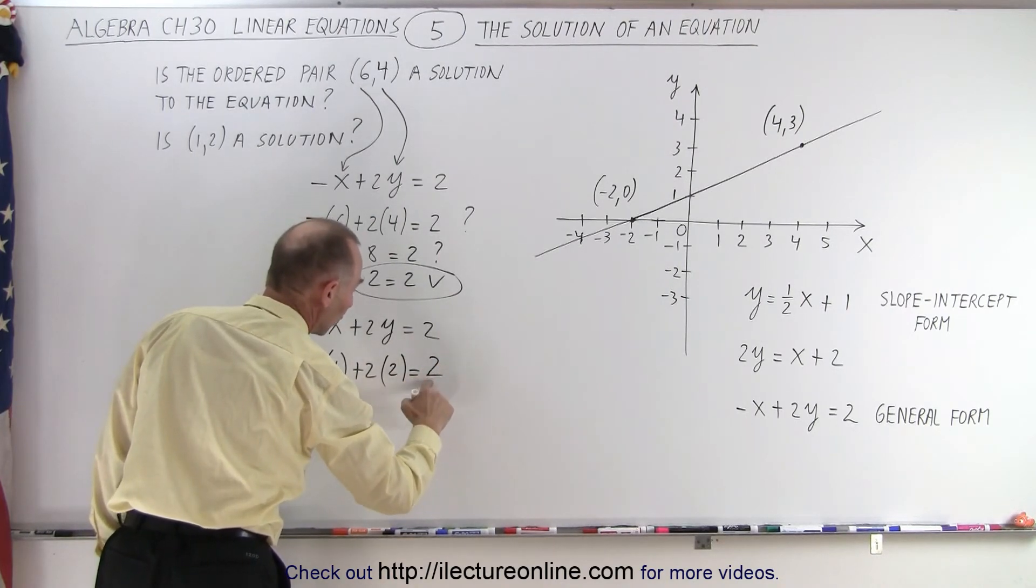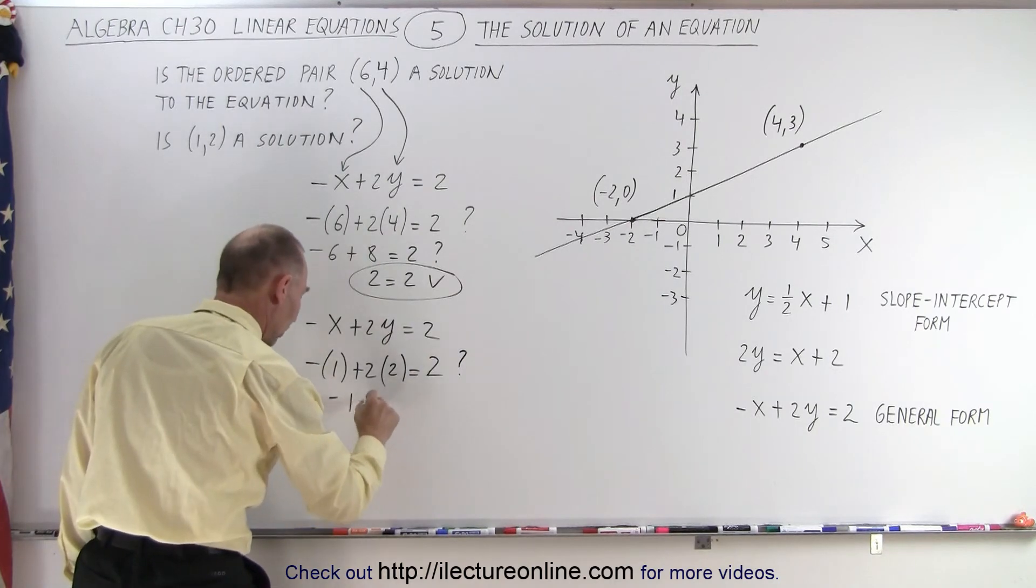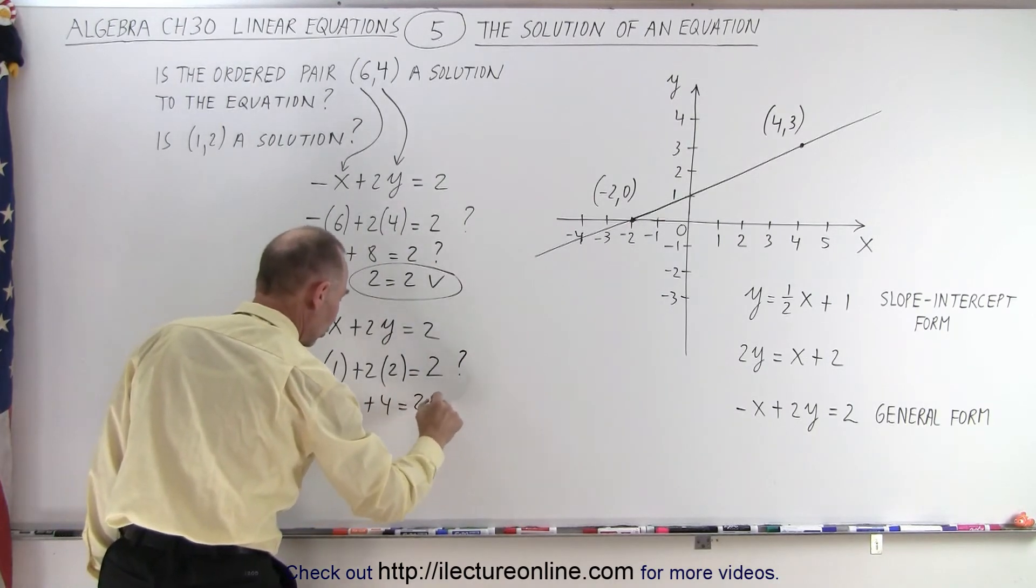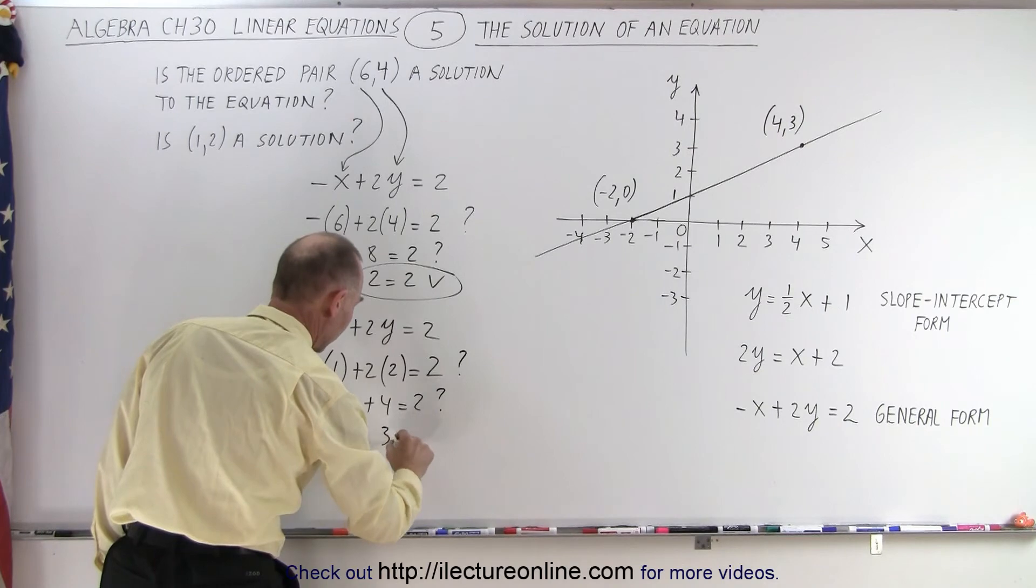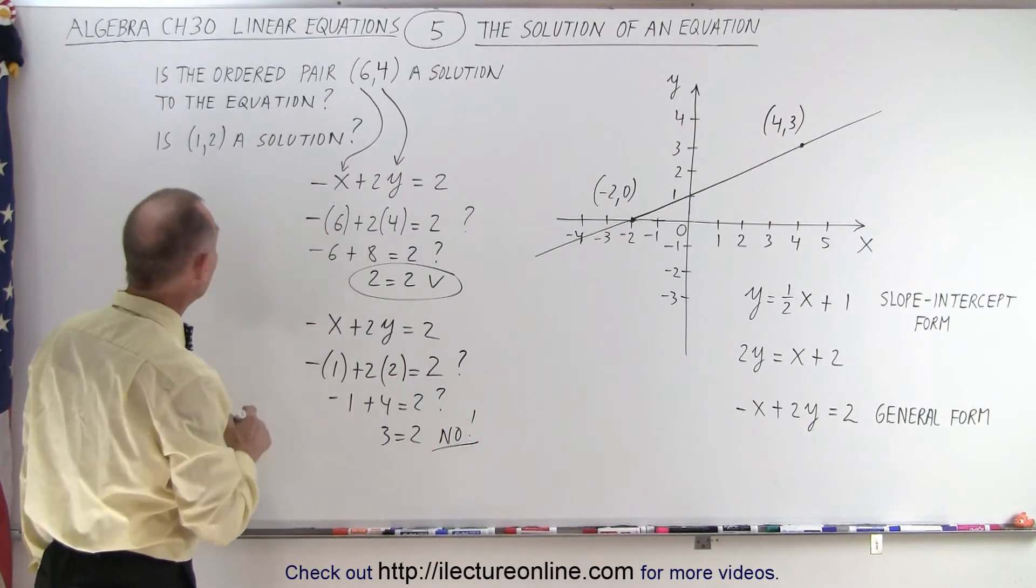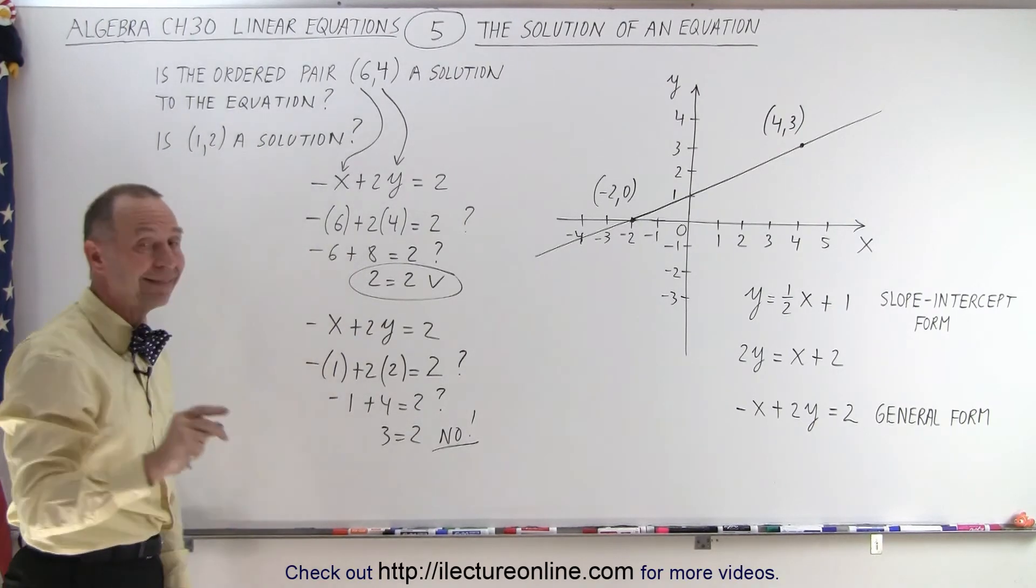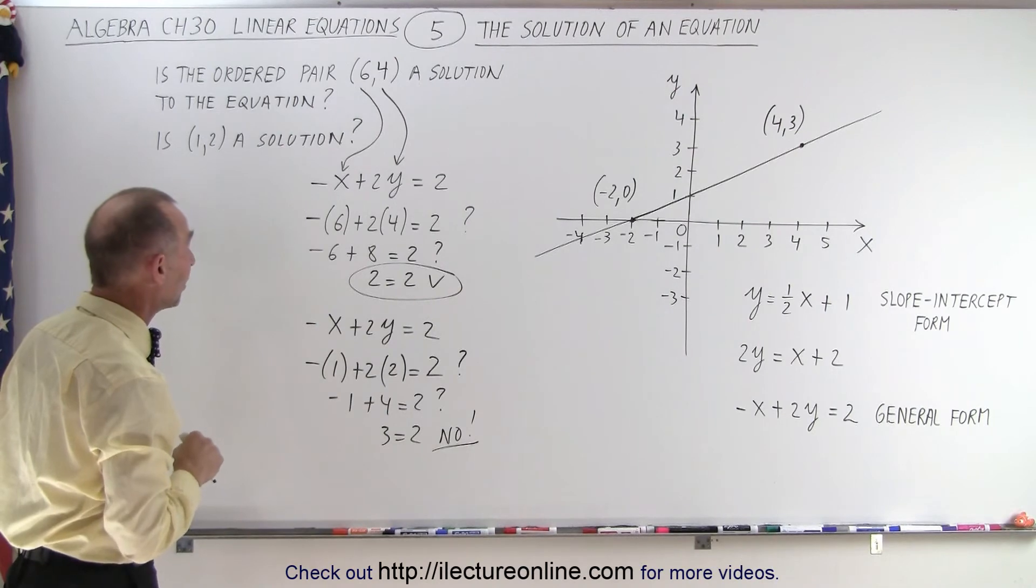Whoop, 2 question mark. And I don't believe so. We get -1 + 4. Is that equal to 2? And we get 3 equals 2. And of course, that's not the case. So the second ordered pair, 1 and 2, which represents a point on the plane, is not a solution to that equation.